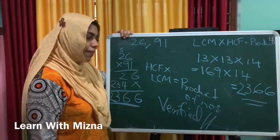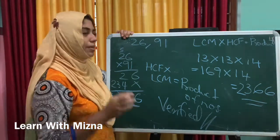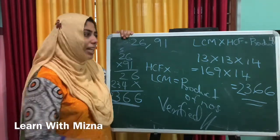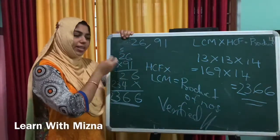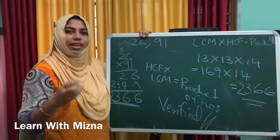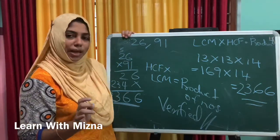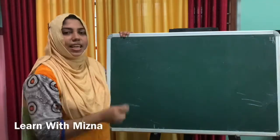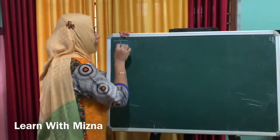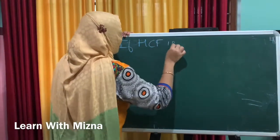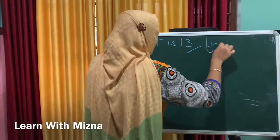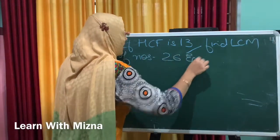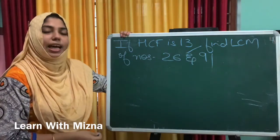HCF into LCM is equal to the product of numbers. I will ask a question: if HCF is 13, find the LCM of numbers 26 and 91. We have two numbers. This is verification. We will answer the question using the formula.